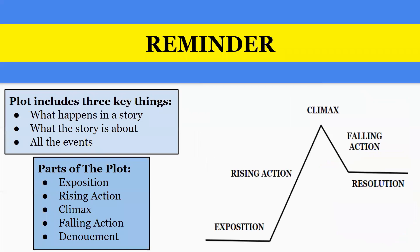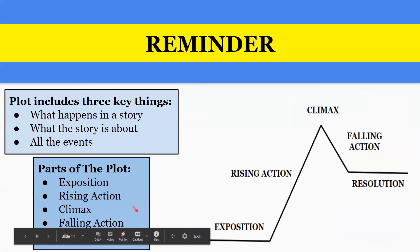So as a reminder, plot includes three key things: what happens in a story, what the story is about, and all the events. And the parts of the plot include the exposition, the rising action, the climax, the falling action, and the denouement.